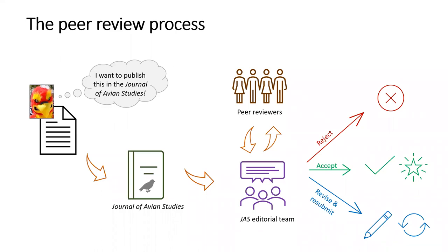The journal editor does a brief review of Dr. Firebird's submission — essentially a quick reality check, looking at whether the submission is generally within the journal's scope and meets submission requirements. This is the first decision point: if the editor thinks the submission is not appropriate, they can reject it. If it's within scope, the editorial team identifies and selects peer reviewers and sends the manuscript for a full review. It's worth noting that getting a full complement of qualified reviewers can be tough — editors have been reporting reviewer fatigue, making it harder to get scholars to agree to review or even complete the review.